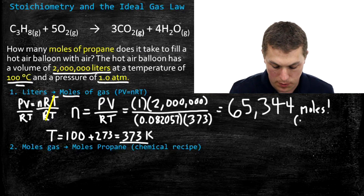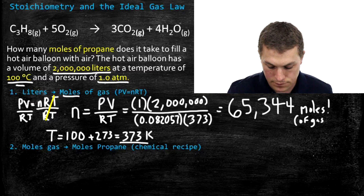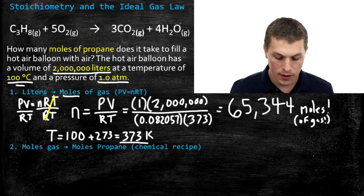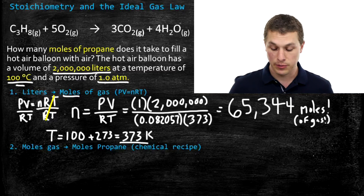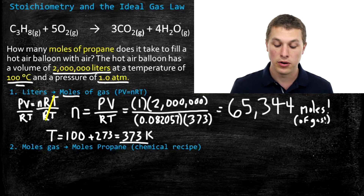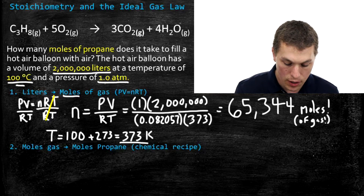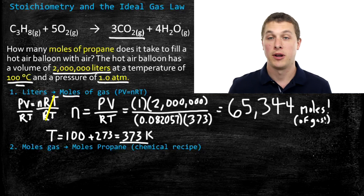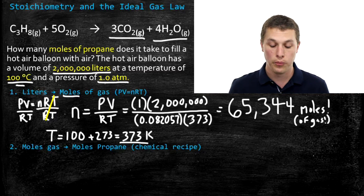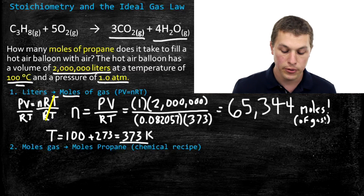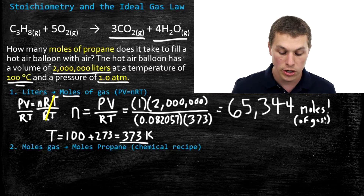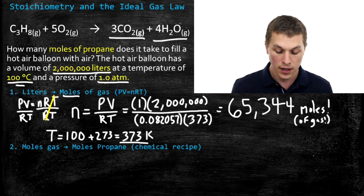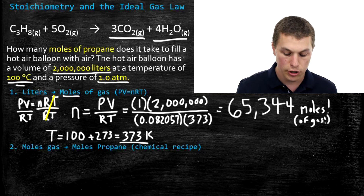That's not just moles — those are moles of gas filling our hot air balloon. That completes the ideal gas law portion. Now we have to do the stoichiometry portion. We know we need 65,000 moles of gas, and remember this gas is made up of both carbon dioxide and water, because when we burn propane we make both of those. So we want to produce 65,000 total moles of gas and we want to know how many moles of propane that took.